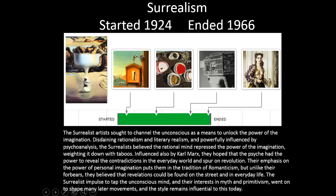Surrealism started about 1924 and ended around 1966. Surrealist artists sought to channel the unconscious as a means to unlock the power of the imagination, disdaining rationalism and literary realism, and powerfully influenced by psychoanalysis. They believed the rational mind repressed the power of the imagination. Influenced also by Karl Marx, they hoped the psyche could reveal contradictions in the everyday world and spur on revolution. Their emphasis on personal imagination places them in the tradition of Romanticism. The Surrealist impulse to tap the unconscious mind remains influential to this day.